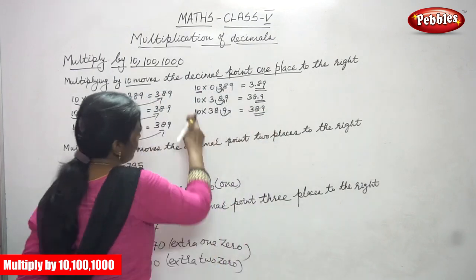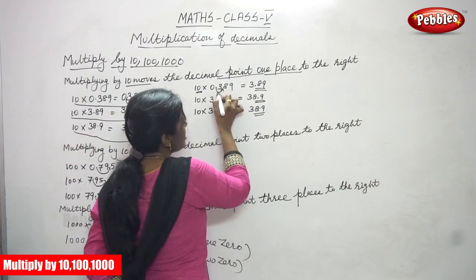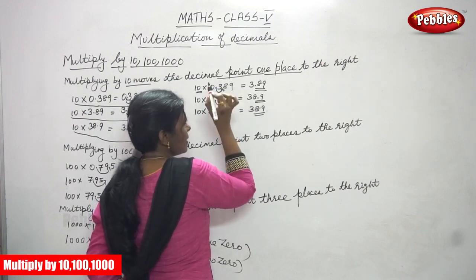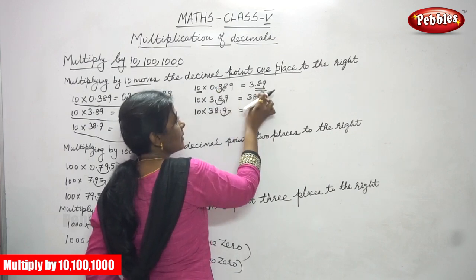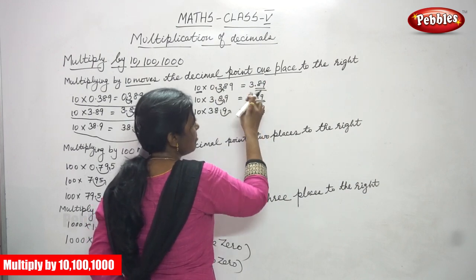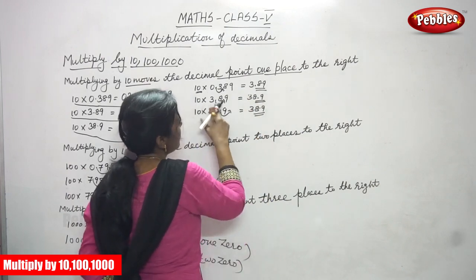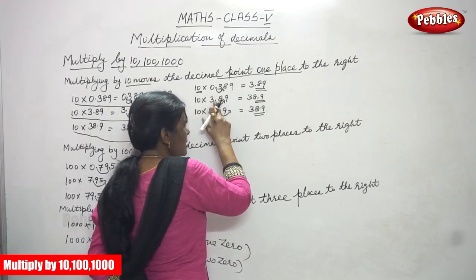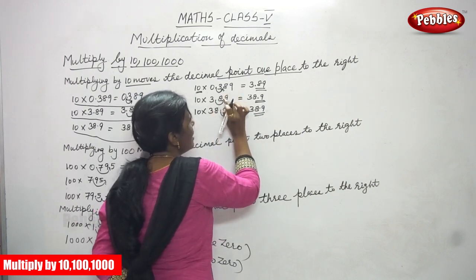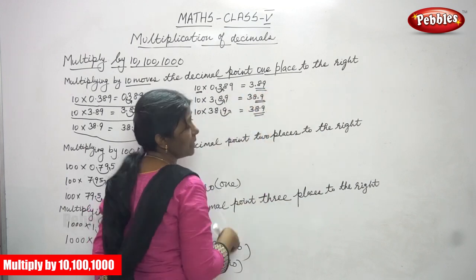I will repeat once again. First, 10 into 0.389 — this point moves to the next place. The 0 is after the point. The point moves to which place? After the 3. It becomes one place to the right — the answer is 3.89. This point comes after the 3. Then again, 10 into 3.89. This decimal point moves one place to the right side. The answer is 38.9.